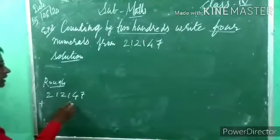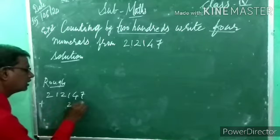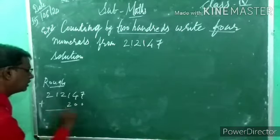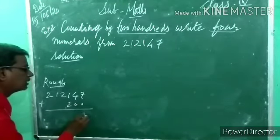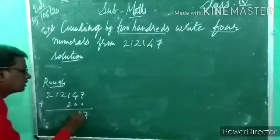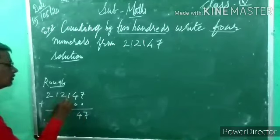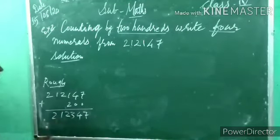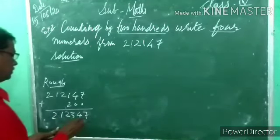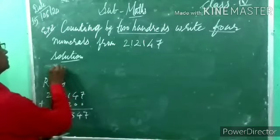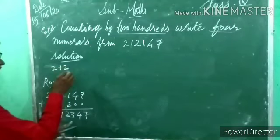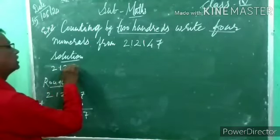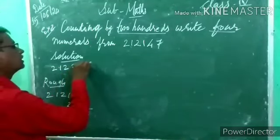200 means 1 stands for 100. So 2,12,147 plus 200: 7 plus 0 is 7; 4 plus 0 is 4; 1 plus 2 is 3; remaining digits 2, 1, 2 stay the same. So 2,12,347.